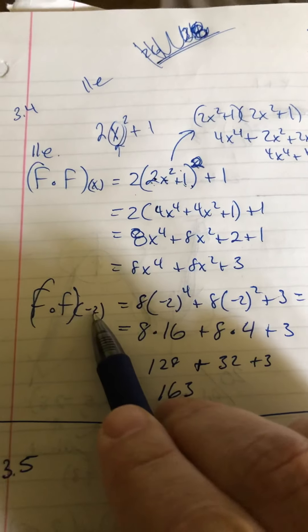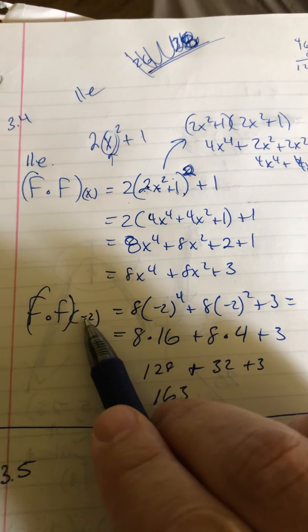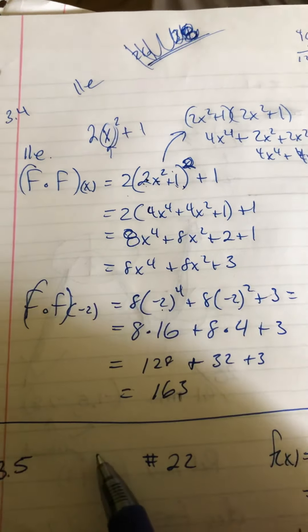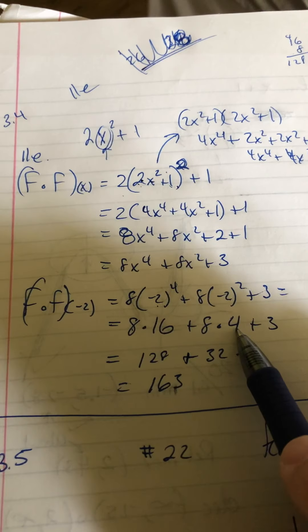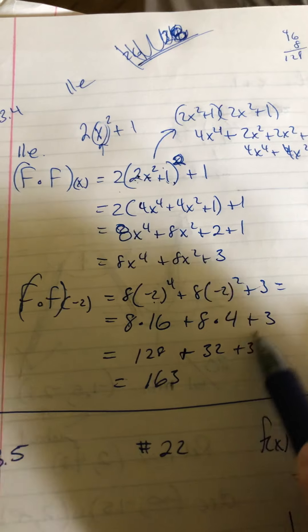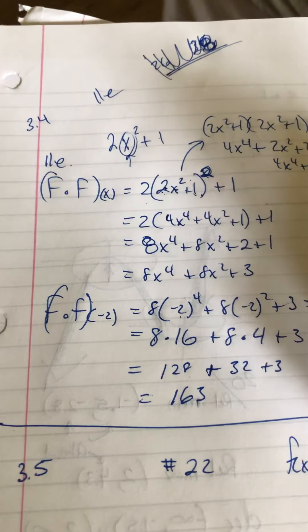Now we're concerned with what's happening at negative 2. I'm going to plug in the negative 2 in place of the x's. I've got negative 2 to the 4th, which is 16. I have negative 2 squared, which is 4. 8 times 16 is 128, 8 times 4 is 32. I add my 3. I add these up and I get 163.